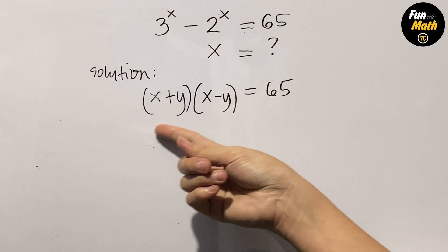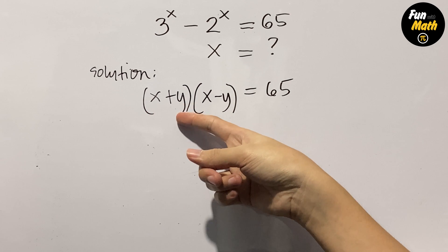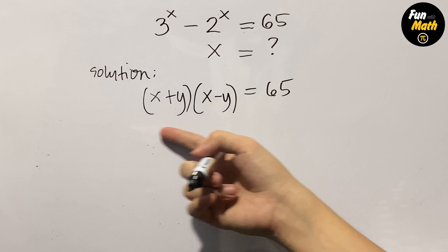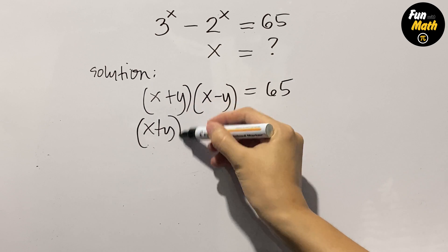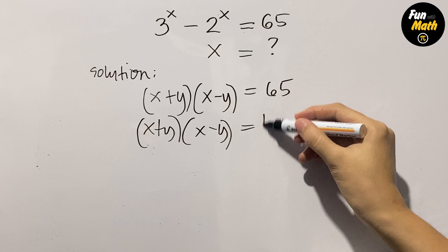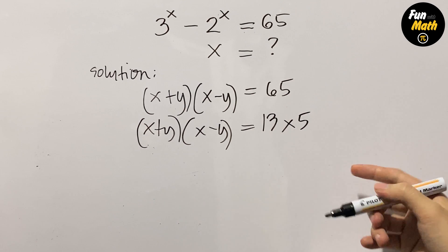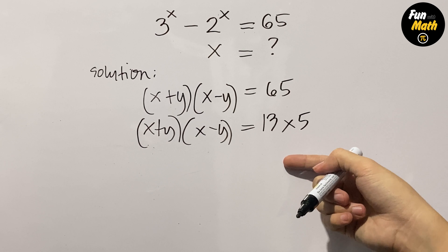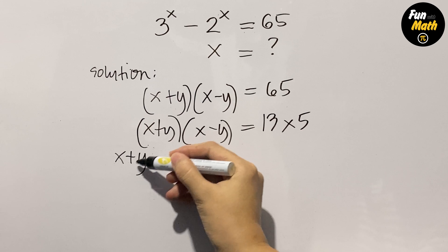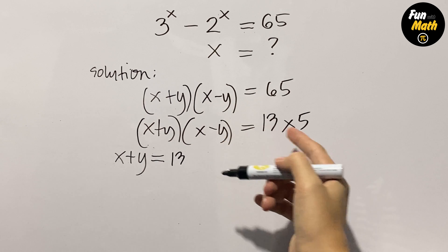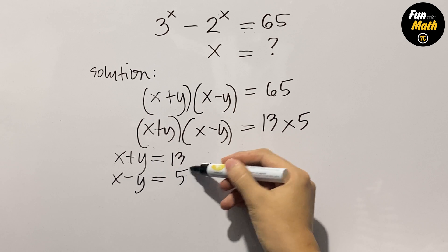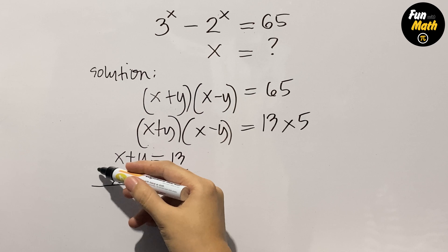To continue, we have x plus y times x minus y equals 65. For 65, we can write it as 13 times 5. So we can write this as: x plus y equals 13 and x minus y equals 5.